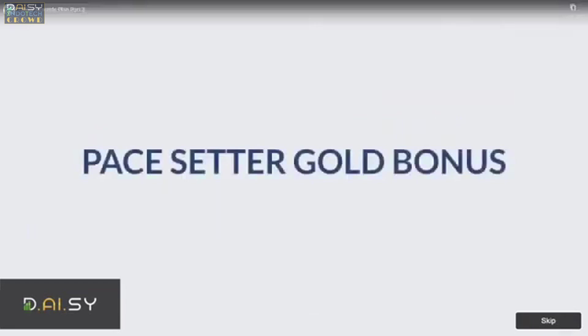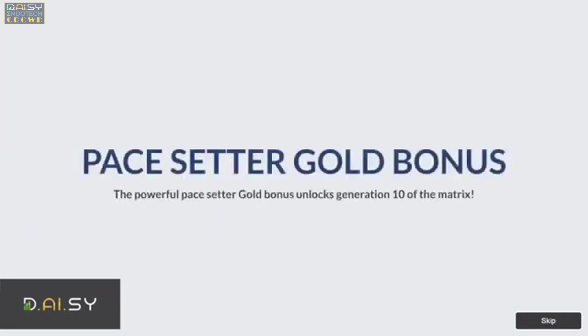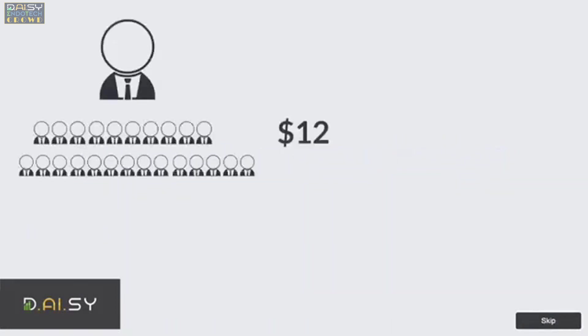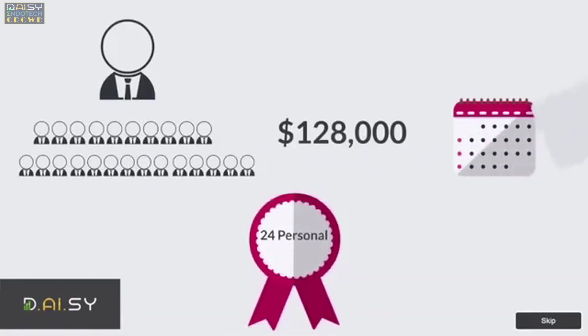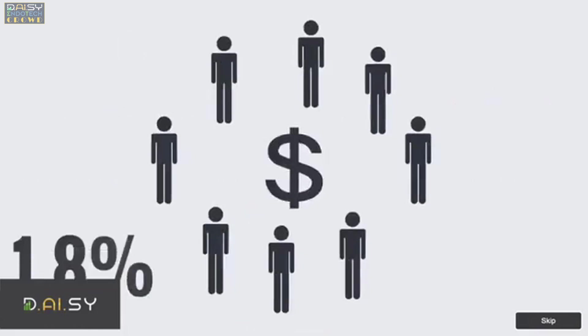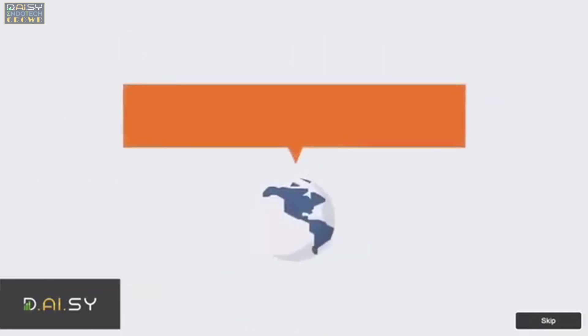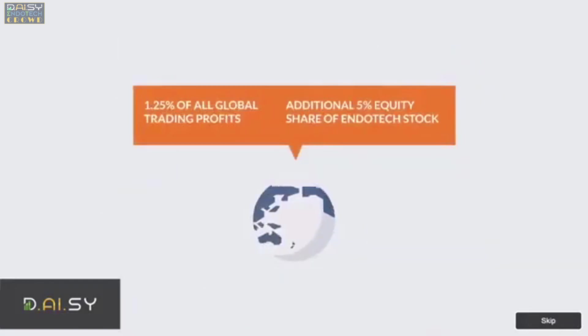Pace setter gold bonus: the powerful pace setter gold bonus unlocks generation 10 of the matrix. With 24 personal referrals that total funded over $128,000 in the first 30 days and qualify for the gold pace setter bonus, this gives you a profit sharing of 1.8% of all global contributions and 1.25% of all global trading profits and an additional 5% equity share of Endotech stock.